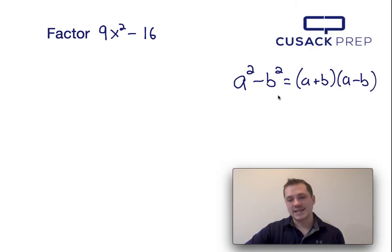Comparing 9x squared minus 16 to a squared minus b squared, I can see that 9x squared is in the same position as a squared and 16 is in the same position as b squared.